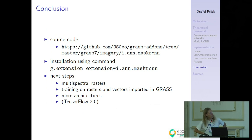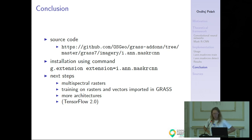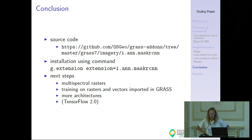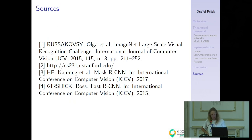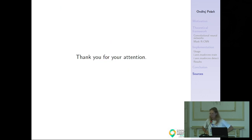You can find it in the official GRASS GIS add-ons repository and install it in GRASS with the g.extension command. Some next steps I'd like to do include supporting more convolutional neural network architectures in GRASS, hopefully as soon as possible. Thank you for your attention.